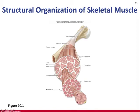You can see the endomysium around each individual muscle fiber. Inside the muscle fiber, the small structures are the myofibrils — the protein components that generate force using ATP. Bundles of fibers make up fascicles, surrounded by perimysium. Then the epimysium wraps the entire muscle. Dense irregular connective tissue becomes dense regular connective tissue at the tendon, which fuses with the periosteum.